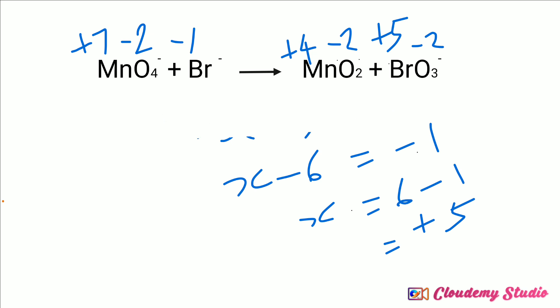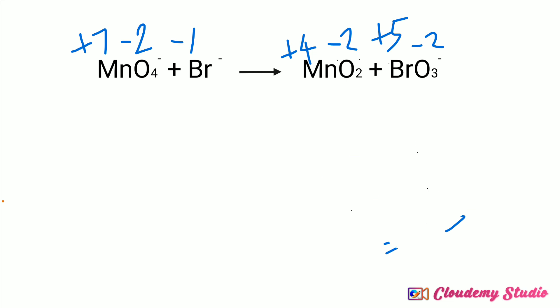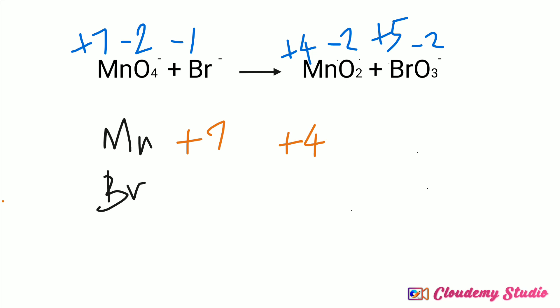Now we have calculated the oxidation numbers of all atoms in the equation. We check the decrease and increase in oxidation numbers for manganese and bromine. In the case of manganese, the oxidation number changes from +7 to +4. In the case of bromide ion, the oxidation number changes from −1 to +5.